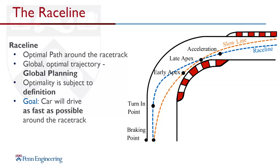A race line has four very important points. The first is the braking point — if you overshoot it, the car goes off track and crashes; if you brake too early, you're going too slow into the turn. The second is the turn-in point, which heavily defines the apex. Here we see an early apex in the orange line and a late apex in the blue line. In this case, the race line looks like the blue line.